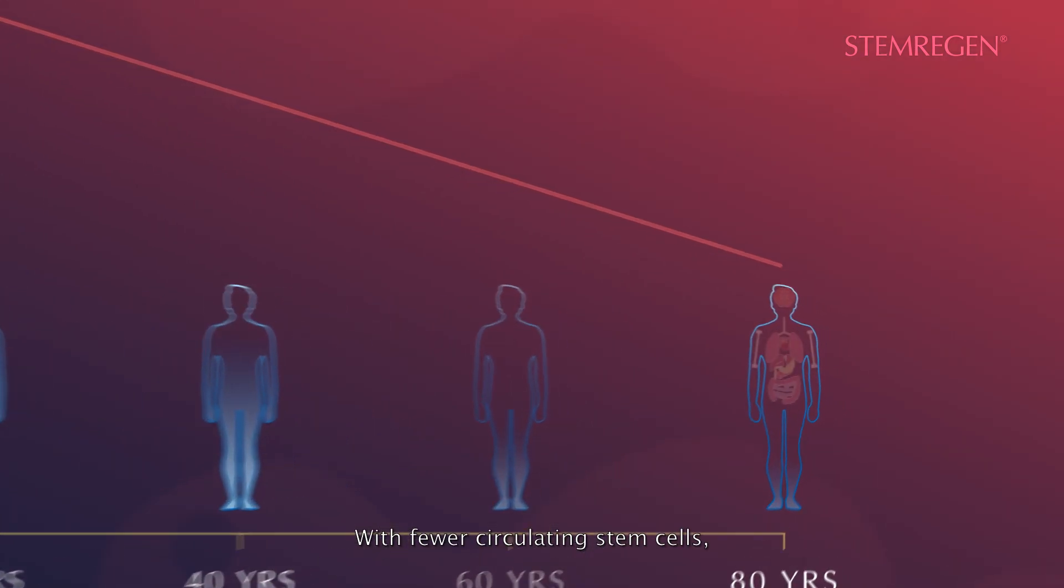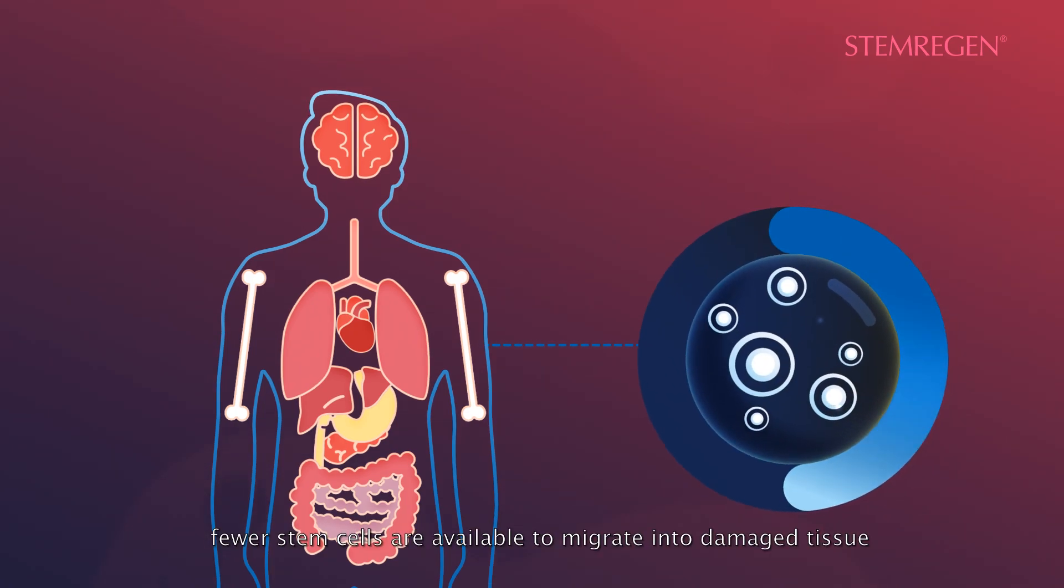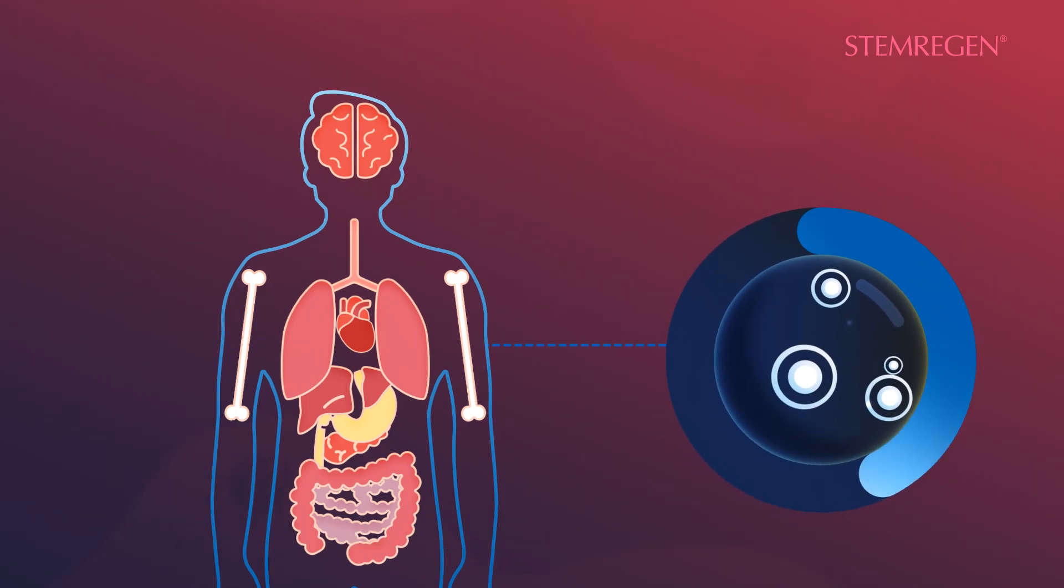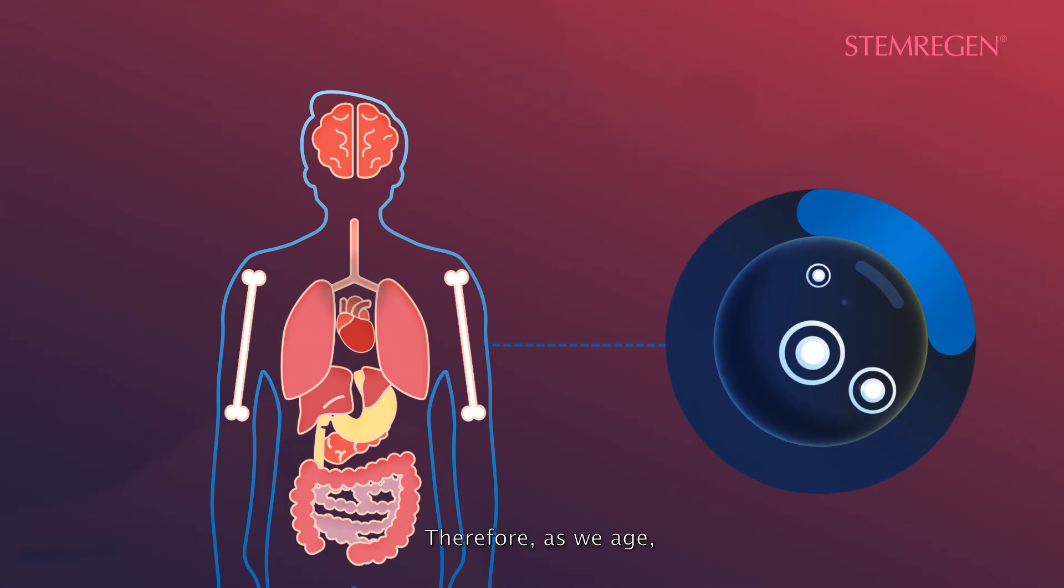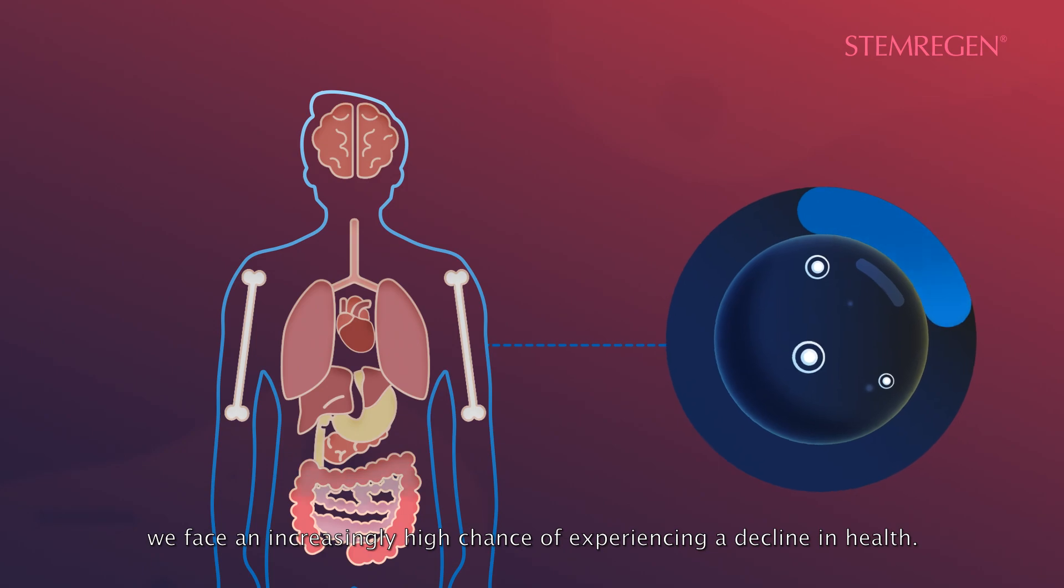With fewer circulating stem cells, fewer stem cells are available to migrate into damaged tissue and participate in the process of tissue renewal. Therefore, as we age, we face an increasingly high chance of experiencing a decline in health.